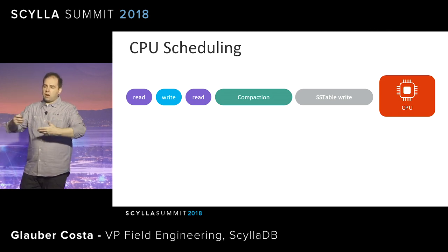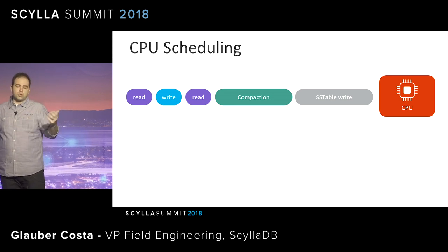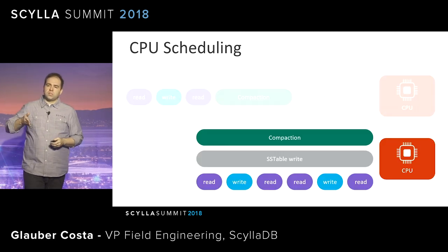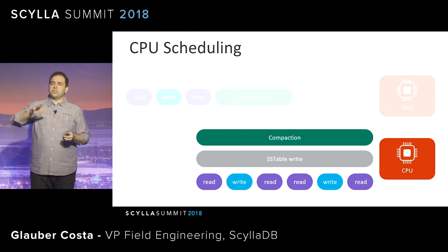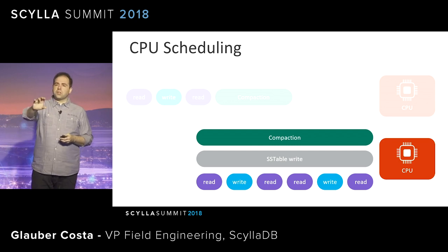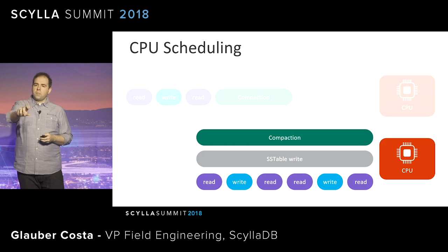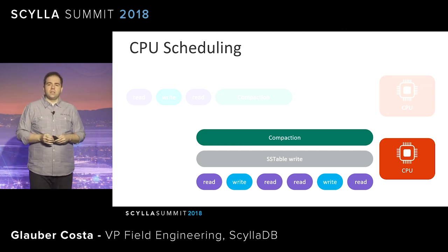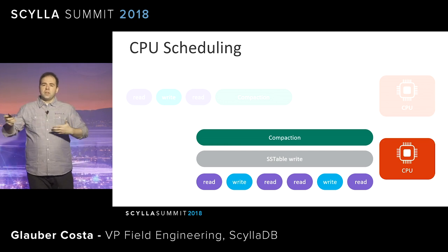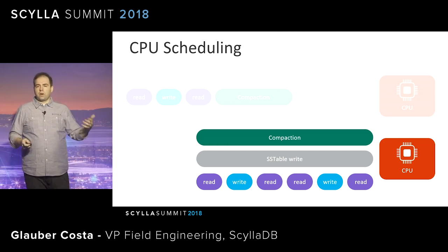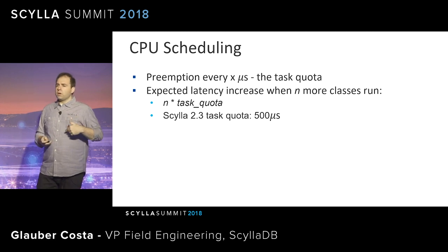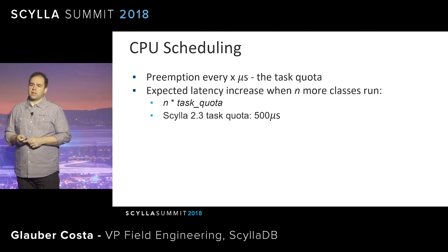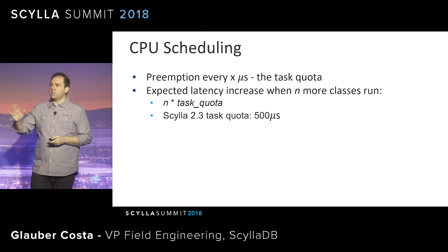You'd have a lot of compaction tasks ahead of your reads and writes with no control over that. What the CPU scheduler does is keep all those classes in separate queues: a compaction queue, a memtable flush queue, a repair queue, and a request queue. As shown in the keynote, you can split it further into user queues for analytics workloads and real-time operational workloads. We switch from one queue to the other every 500 microseconds — this number is configurable, and there's a reason for keeping it there.